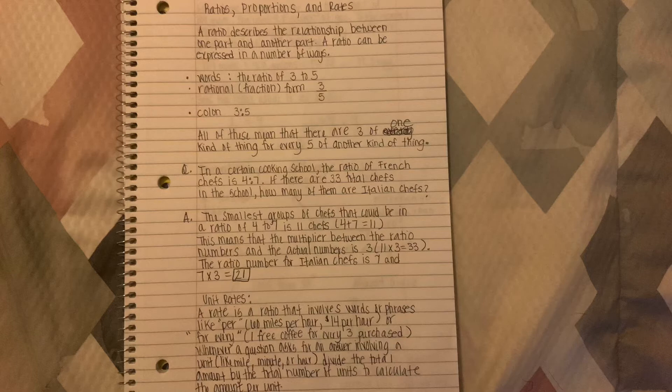You're going to have 11 times 3 and that's going to give you the 33. The ratio number of Italian chefs is 7, and 7 times 3 is 21. So your answer is 21.